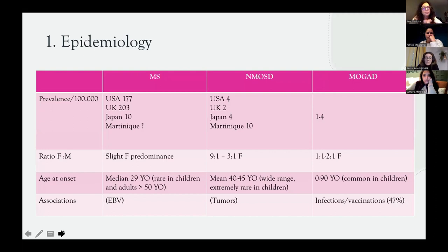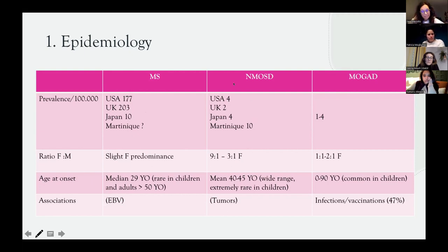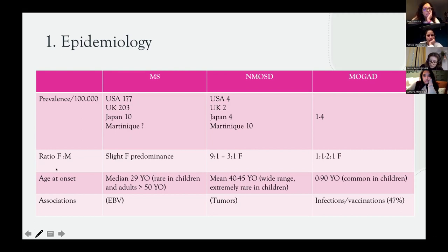Looking at demographic differences: multiple sclerosis is much more common than NMOSD and MOGAD. MS prevalence varies across different parts of the world, while for MOGAD it is similar globally, though much less prevalent. NMOSD is less common than MS and also varies by region. The female-to-male ratio also differs — there is a slight female predominance in MS, a much higher female predominance in NMOSD, and almost one-to-one in MOGAD.